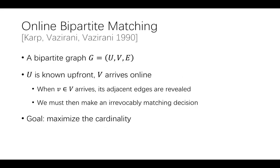Let me first introduce the classical online bipartite matching model, which was first introduced by Karp, Vazirani, and Vazirani in 1990. The model gives a bipartite graph G with vertex sets U and V and an edge set E. Vertices in U are known up front, and vertices in V arrive one by one. When an online vertex V arrives, its adjacent edges are reviewed, and we must match it to one of its neighbors. The goal is to maximize the cardinality.